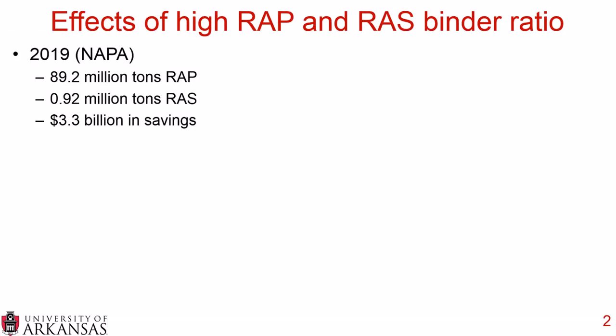Before we get into the details of the effects of high RAP and RAS binder ratios, it's nice to look at some data. In 2019, the National Asphalt Pavement Association or NAPA states that 89.2 million tons of RAP, or reclaimed asphalt pavement, was used in the United States, and just under 1 million tons of RAS, or recycled asphalt shingles, was used. The use of these two recycled materials led to approximately 3.3 billion dollars in savings, including both asphalt binder and aggregate material costs.